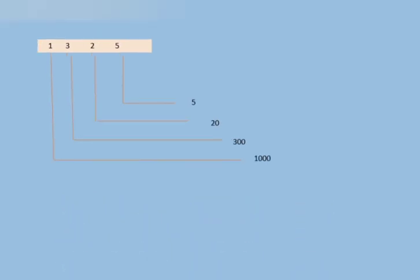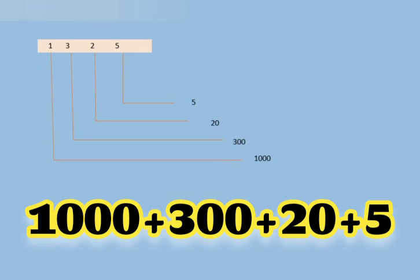Now we have 1325. We can write 1 as 1000 because it is on the 1000's place, 3 is on the 100's place, 2 is on the 10's place, and 5 is on the 1's place. So we can write it as 1000 plus 300 plus 20 plus 5 in expanded form. I hope that you are getting my point.